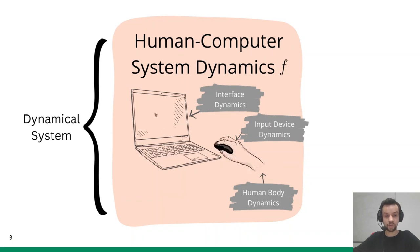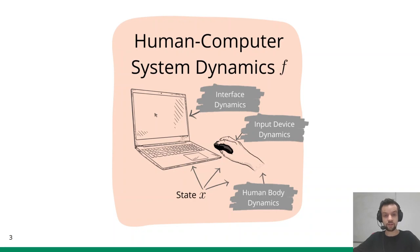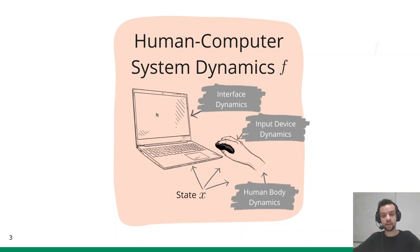In our example, the world state X encompasses not only the cursor position, but also the velocity vector of the input device and the state of the user's body, such as muscle activation and excitation. However, you can include in the state X any quantities you are interested in. To describe how users intentionally generate movement in interaction, we add a second part, the human controller.